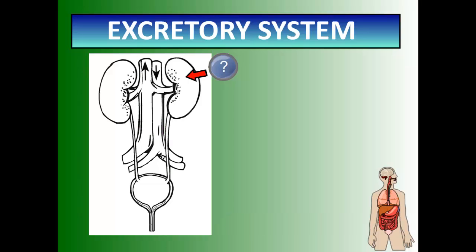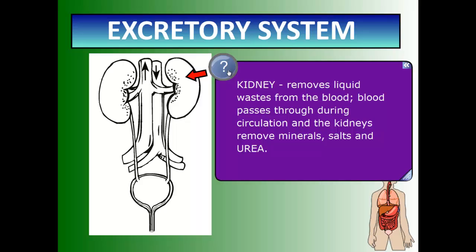So what are the structures involved? Let's take a look at the internal anatomy first. This structure here, which looks like a kidney bean, is your kidney. The kidney removes liquid waste from the body. Every drop of your blood passes through the kidney during circulation, and it's the kidneys that help to remove minerals, salts, and something called urea. We'll describe urea in a little bit.